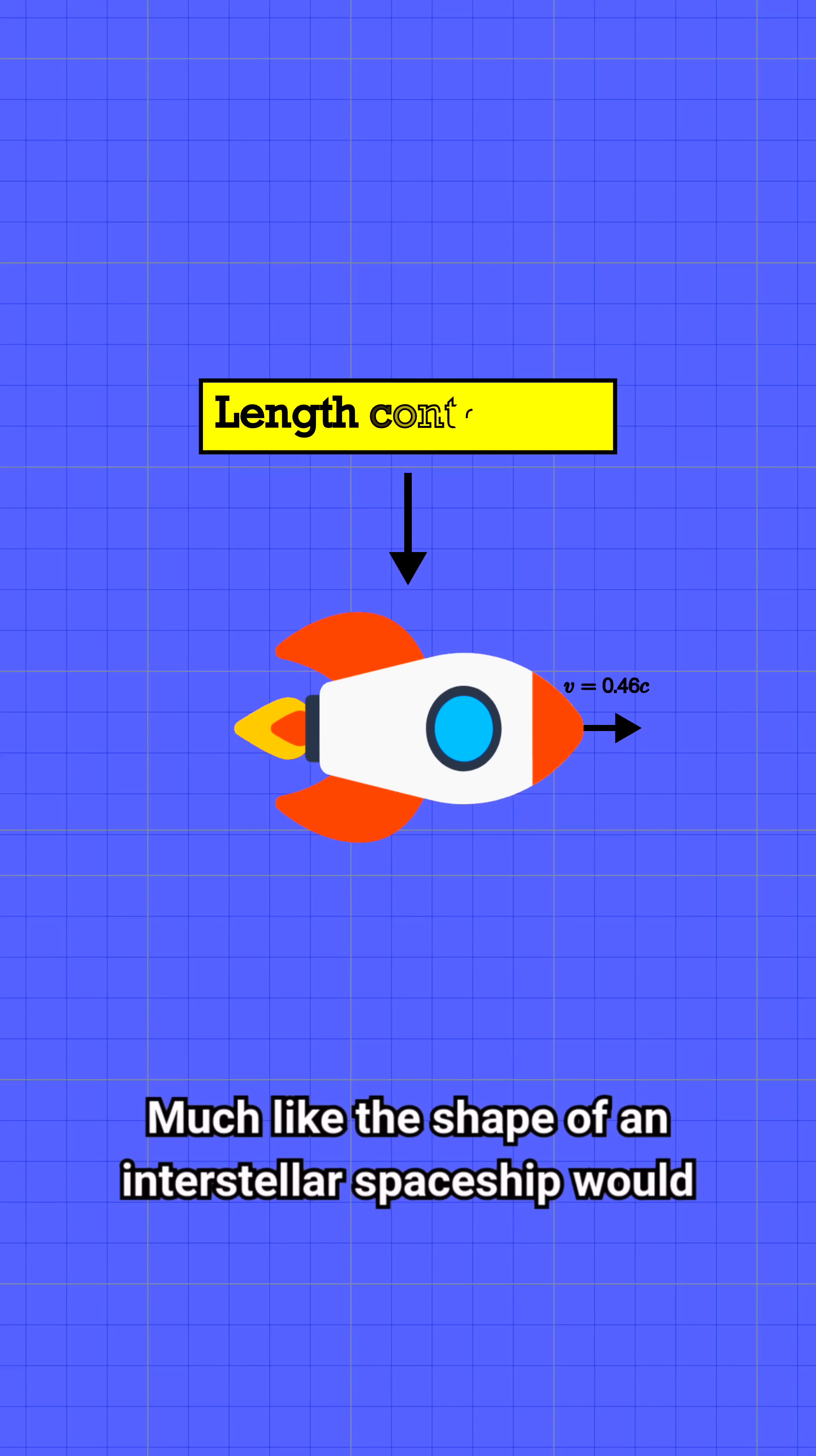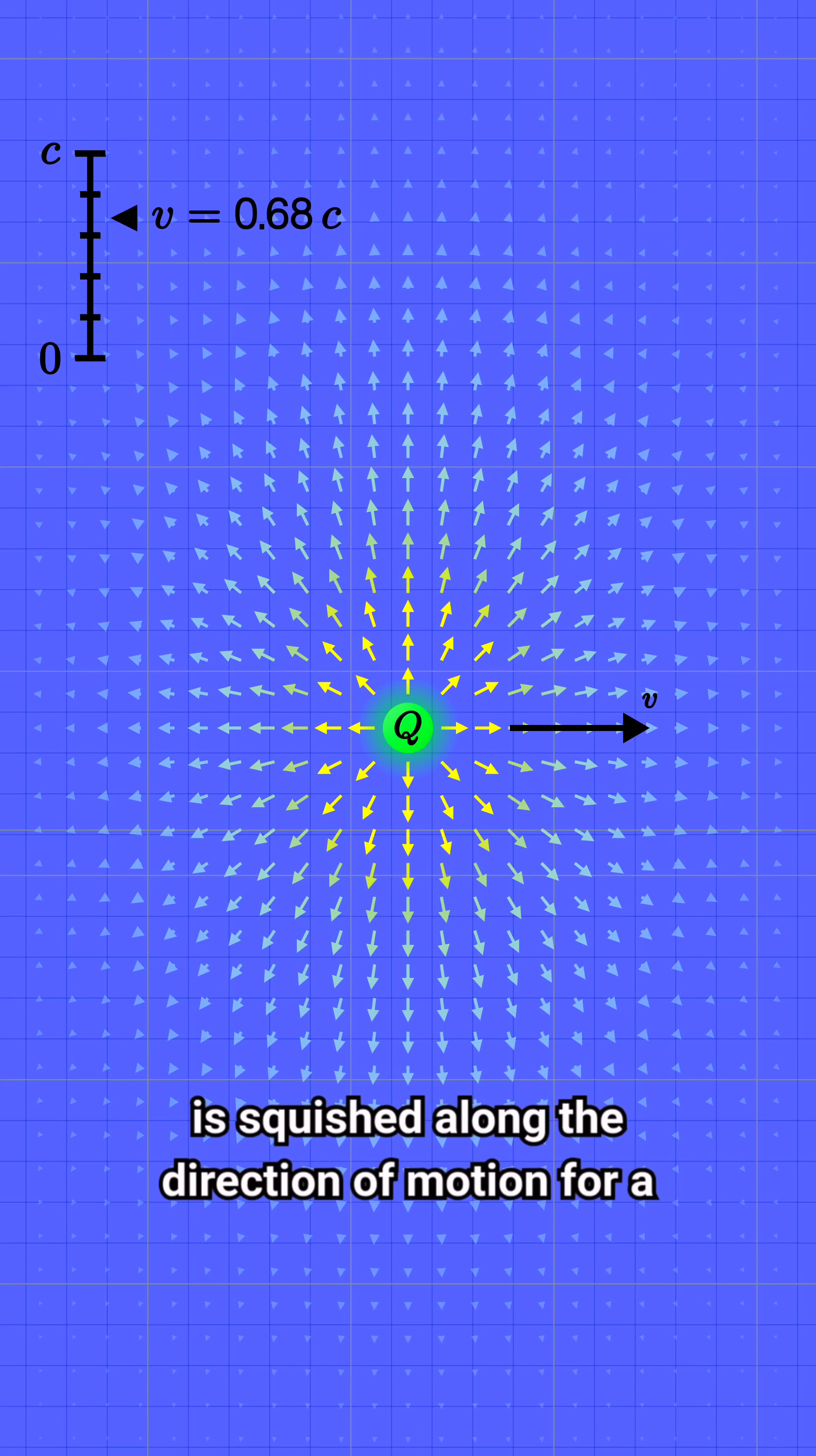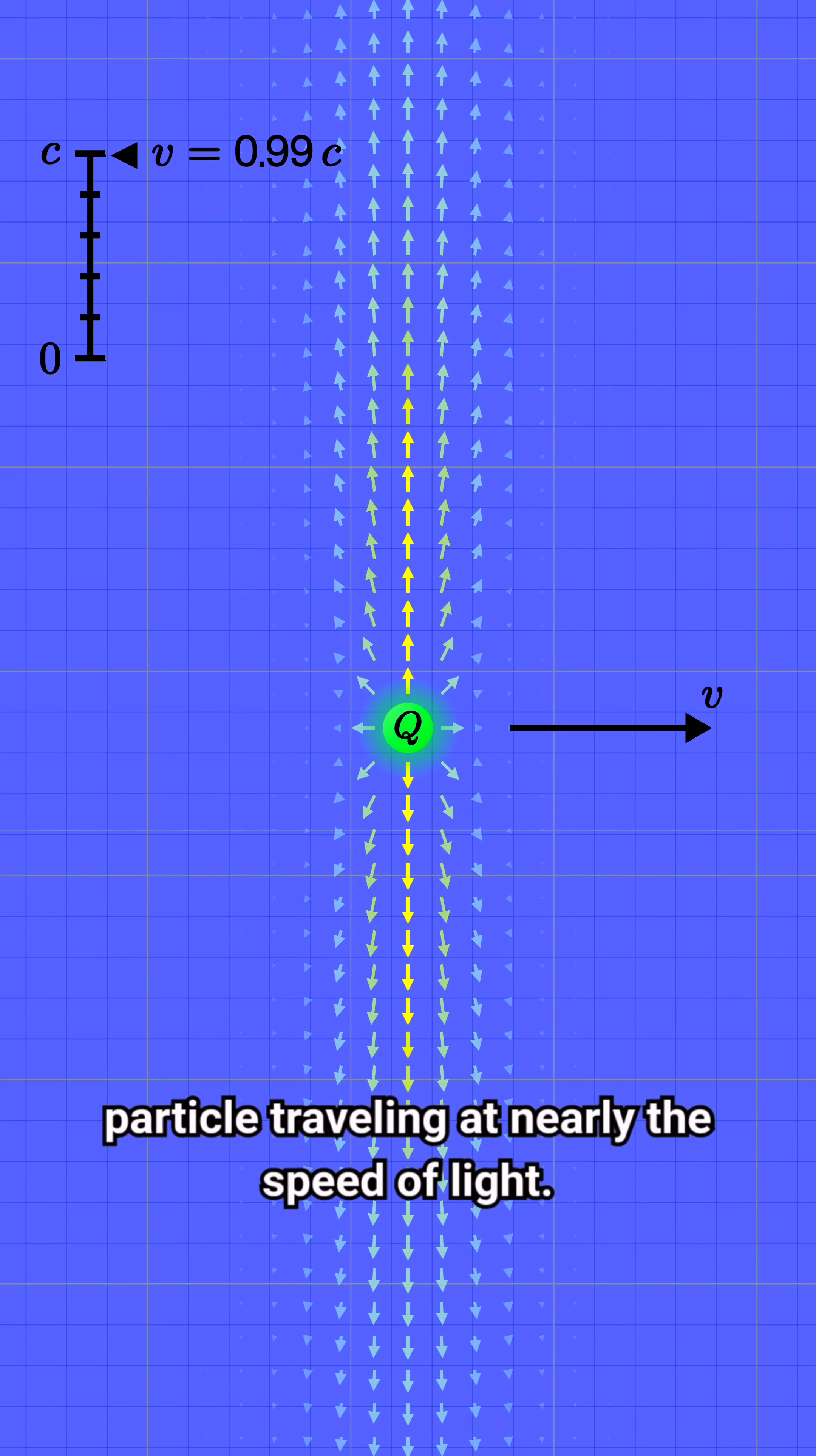Much like the shape of an interstellar spaceship would be contracted along its length due to the effects of special relativity, the electric field, too, is squished along the direction of motion for a particle traveling at nearly the speed of light.